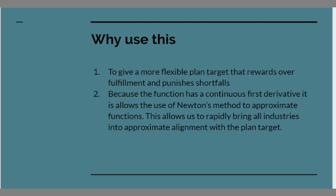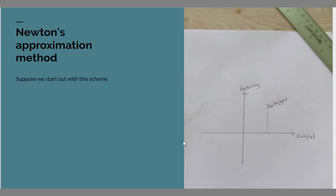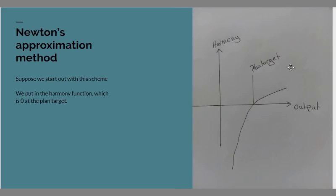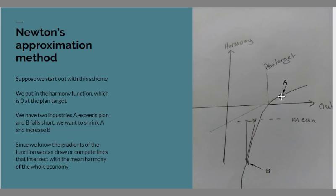I'm just going to run through how Newton's approximation method works here. So we start out with some scale of output and a plan target and here's our harmony axis. We'll draw in the harmony function and as before it's zero when we exactly hit the plan. Now suppose our starting position has one industry A that exceeds the plan and another industry B that falls short of its planned target. So industry B will have a sharply negative harmony, industry A will have a slightly positive harmony. And this is clearly a bad use of resources so we want to shrink industry A and expand industry B. But by how much?